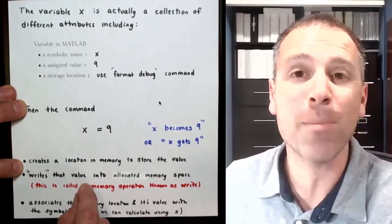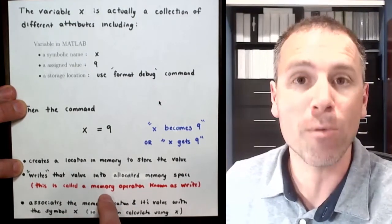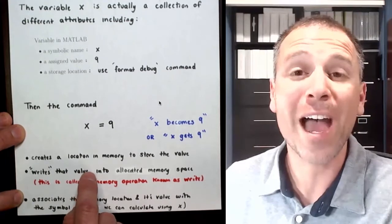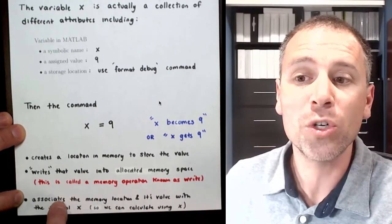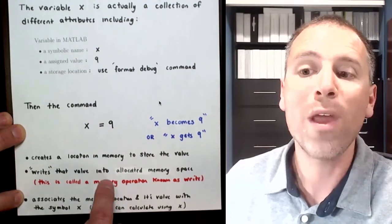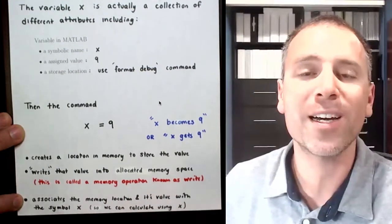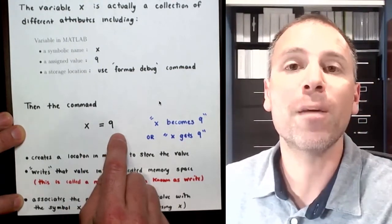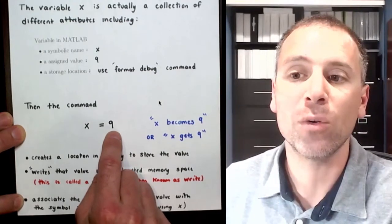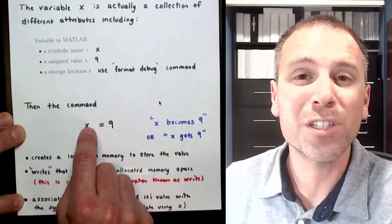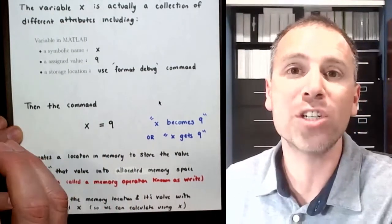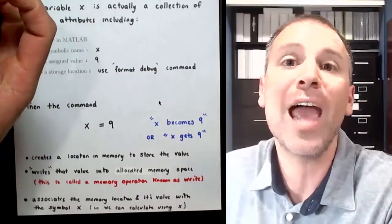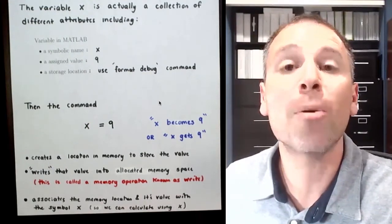I'm going to encourage you to think about the assignment operator or read it as 'becomes' or 'gets'. We create a location in memory where we store the value of 9 — that's a write operation. In other words we write the value of 9 into that memory location. A write takes a value and stores it in a variable. After that writing is done, MATLAB internally associates that memory location and its stored value with the user-defined symbol x. Referring back to x in the future is a read operation — a read operation goes to that memory location and collects the stored value for a particular calculation.